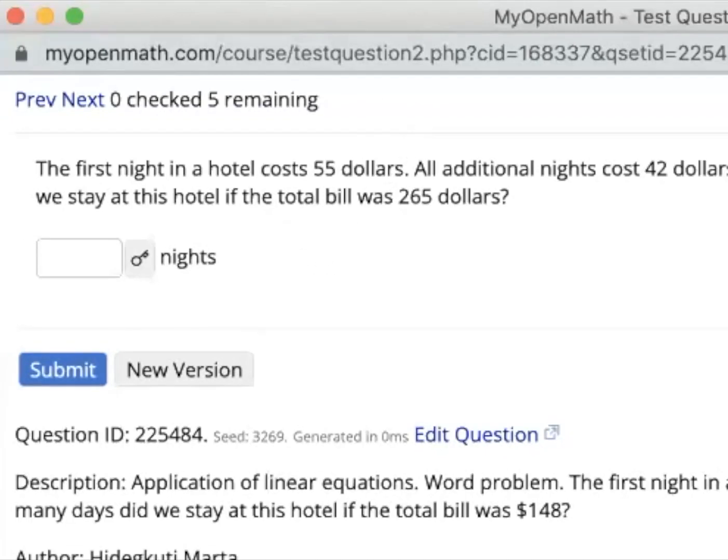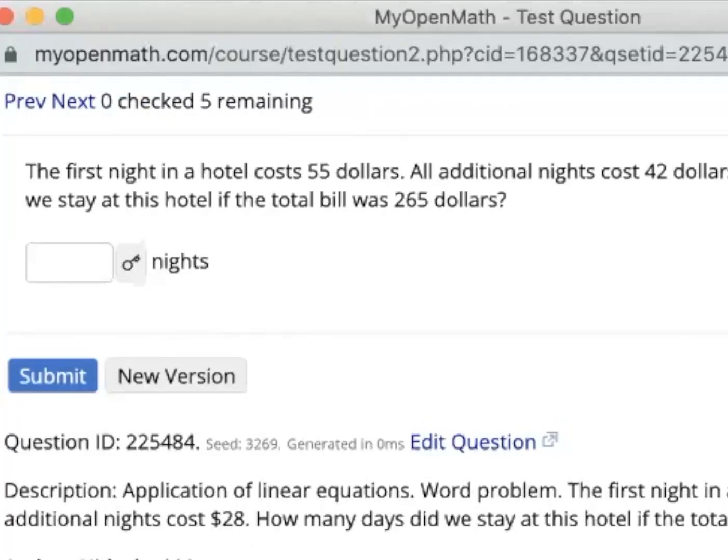Okay, so we have this word problem. The first night in a hotel costs $55. All additional nights cost $42. How many nights did we stay at this hotel if the total bill was $265?